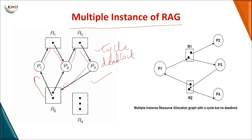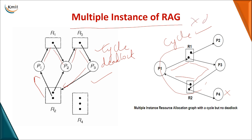In the second multiple-instance example, tracing the cycle P1→R1, P2→R3, P3→R2, R2→P1: P3 is waiting for one instance of R2. One instance is with P1 and the other with P4, but P4 is not waiting for any other resource. After P4 completes, it releases R2, which can be given to P3, allowing P3 to continue. Similarly, R1 can be released to P1. This is not indefinite blocking — there is some waiting, but not complete blocking of all processes. So even with a cycle in a multiple-instance graph, it does not necessarily lead to a deadlock.